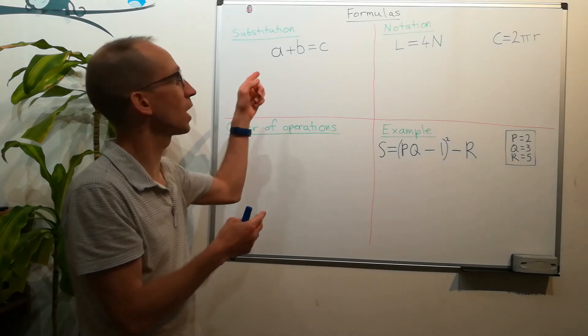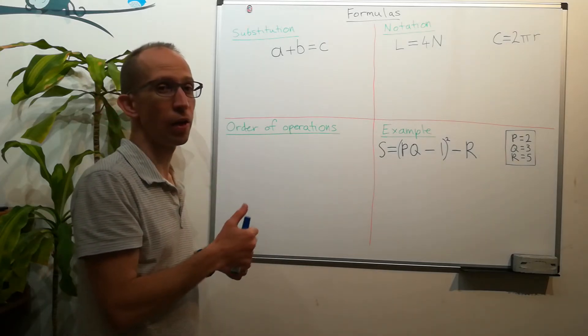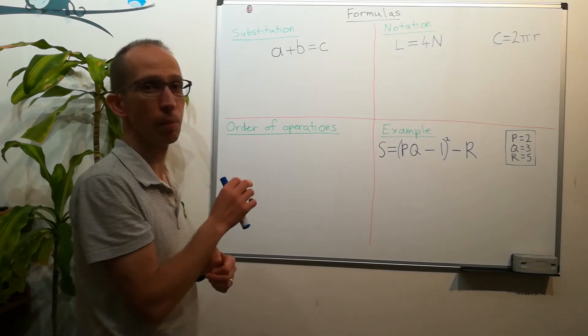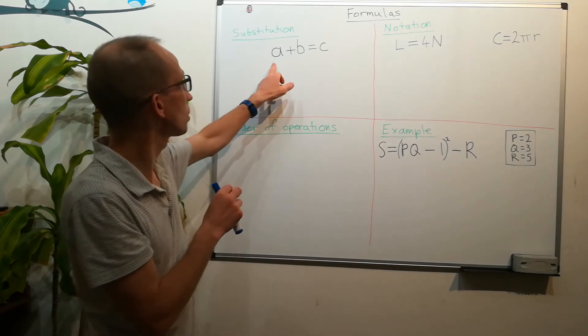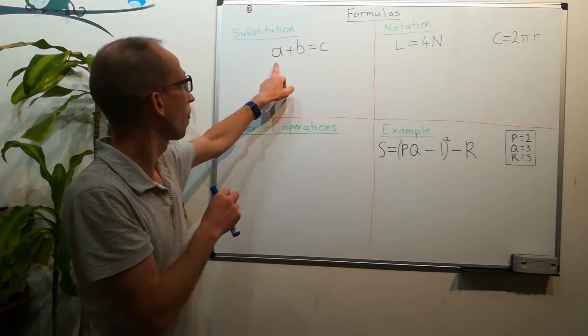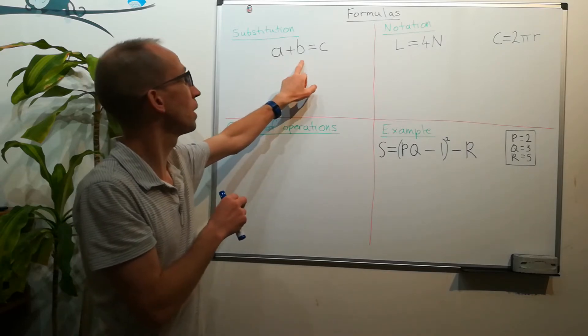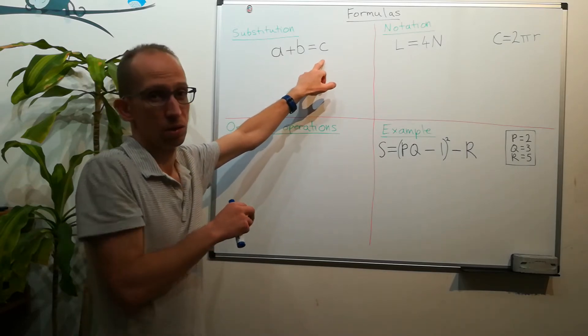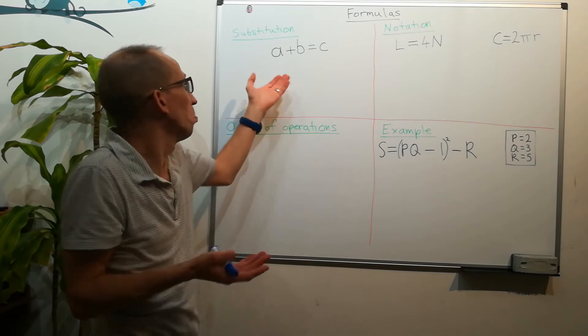So if we start looking here for example, we've got a plus b equals c and we can say well we don't know what c is, but if we're told a equals 2 and b equals 3, then we can substitute these numbers into this little formula.